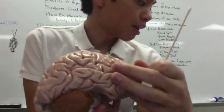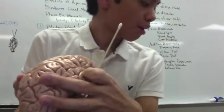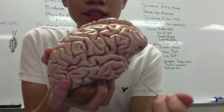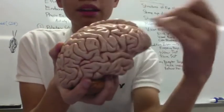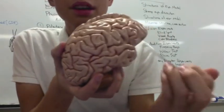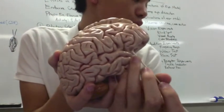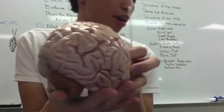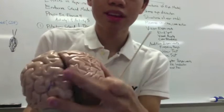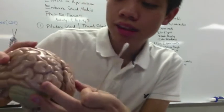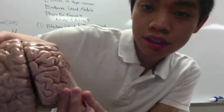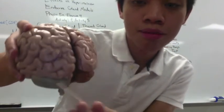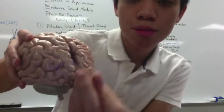You have the lateral cerebral fissure, also called the Sylvian fissure, which separates your temporal lobe from your frontal lobe. Then there's the parietal occipital sulcus — there's a line that goes across separating your parietal lobe from your occipital lobe.